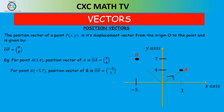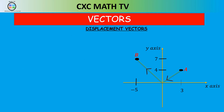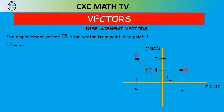Now the next thing is displacement vectors. The displacement vector AB is the vector going from point A to point B. We can go from A to O and then from O to B. The inverse vector can apply, so that's minus OA plus OB, and therefore vector AB is equal to OB minus OA.